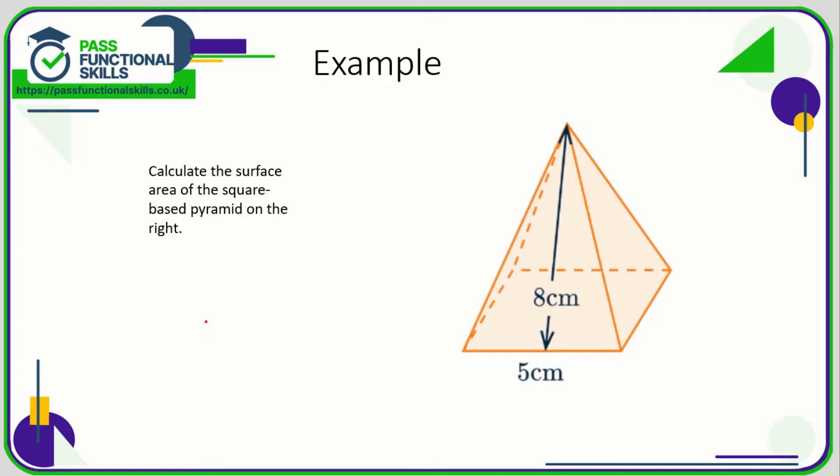Let's take a look at an example on surface area. We've got a square-based pyramid, so we've got a square base with dimensions of 5 by 5. The area of the square is going to be 5 times 5, which is 25 square centimeters.